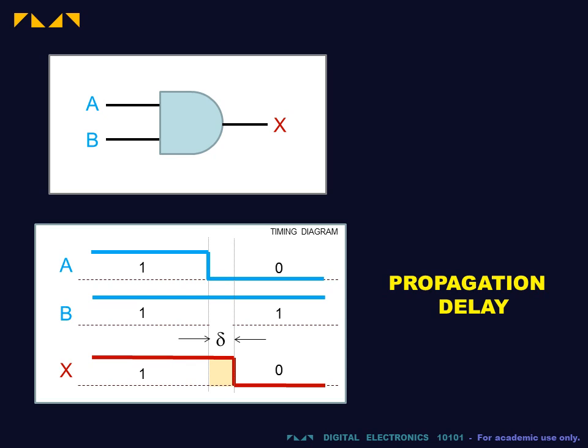It is a property of the device in question, and generally increases with the device's complexity. For a basic gate, the propagation delay is of the order of 10 nanoseconds.